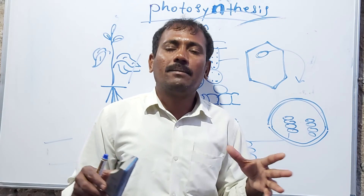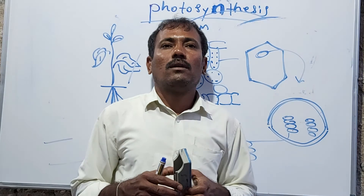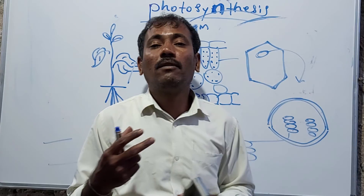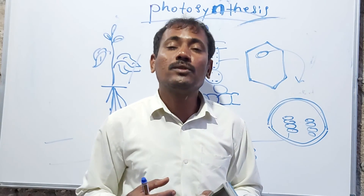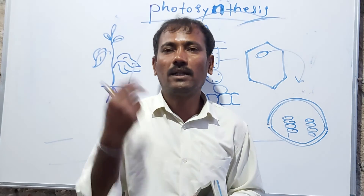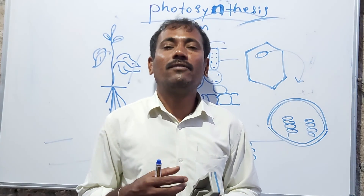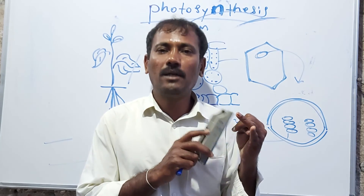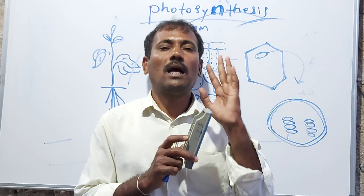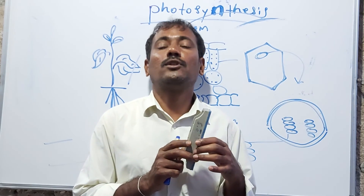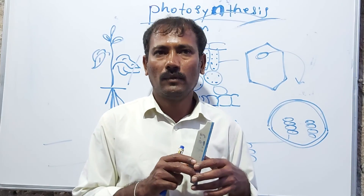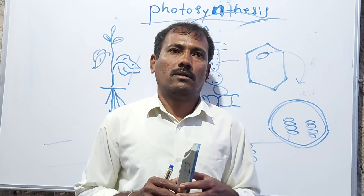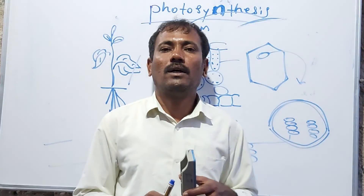In order to understand the exact mechanism of photosynthesis, let's move to study the required raw materials. The raw materials required for photosynthesis are carbon dioxide, water, sunlight, and pigments — all essentially required for photosynthesis to occur within the plant cell.